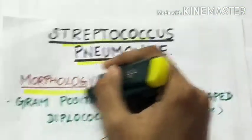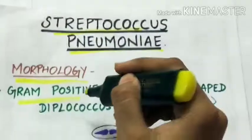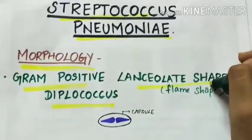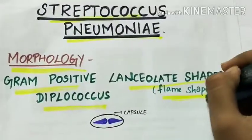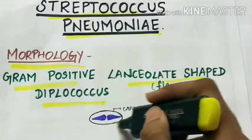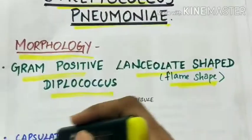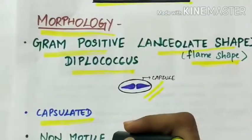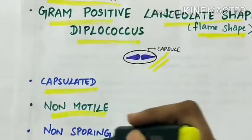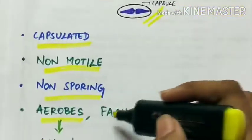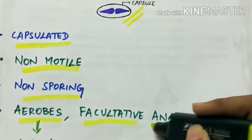Morphology. They are gram positive diplococcus which are paired and lanceolate shaped, flame shaped. They are capsulated, non-motile, non-sporing, both aerobic and also facultative anaerobes.